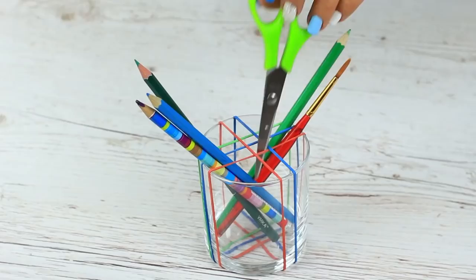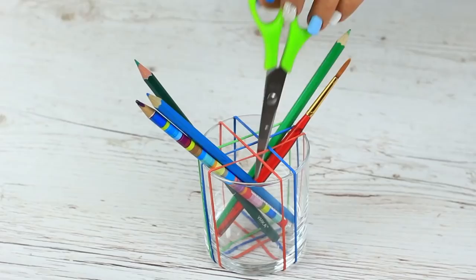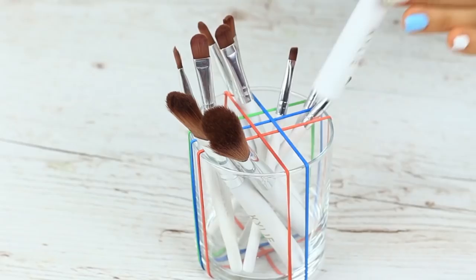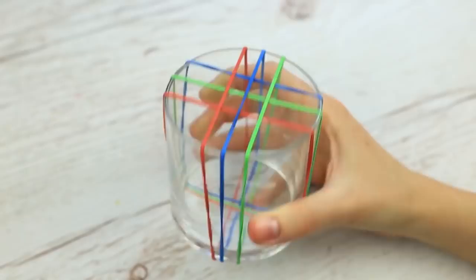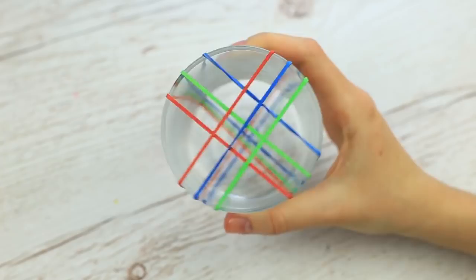Make a convenient holder for brushes and pencils using elastics. Put them on the glass. Move them to the center to avoid slipping off. Three elastics will be enough. Put on the next three criss-cross. We've used six elastics to get a simple school supply holder. You can be sure your painting and drawing tools won't scatter around.